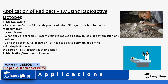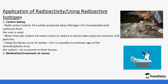When animals die, the carbon-14 starts to reduce as decay takes place by emission of beta particles. Using the decay curves of carbon-14, it is possible to estimate the age of an animal since the carbon-14 present is in their tissues. They check the amount of carbon-14 and how much it has decayed, then use that information and calculation to determine how long that specific fossil has lived.